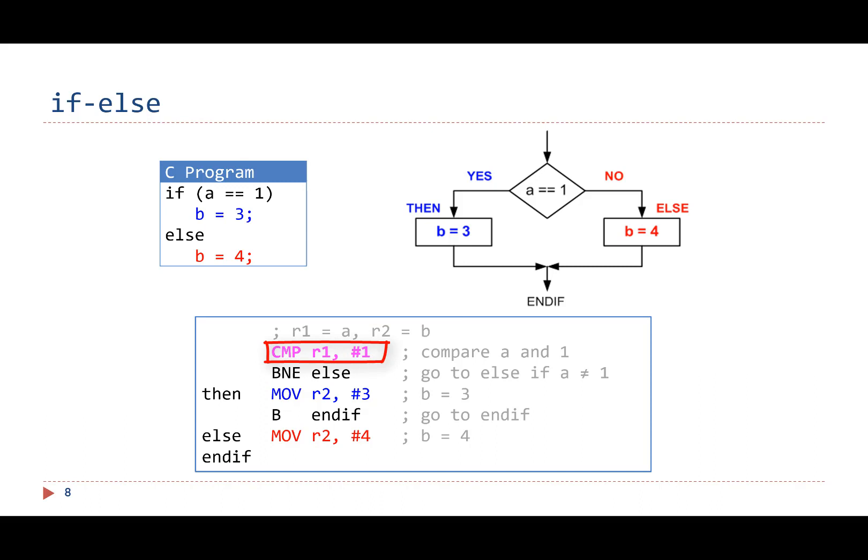First, we compare register R1 with 1. The BNE instruction will branch to the instruction labeled as else if R1 does not equal 1. Otherwise, the next instruction will be executed to set register R2 to 3. The unconditional branch instruction, B end if, always skips the instruction labeled as else.